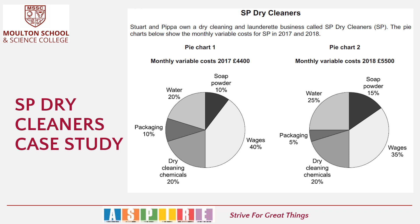So let's have a look at the SP Dry Cleaners case study. Stuart and Pippa own a dry cleaning and launderette business called SP Dry Cleaners. The pie charts below show the monthly variable costs in 2017 and 2018. Please be careful that you identify which pie chart is which. Quite often students don't look at the years and then use the wrong information to do the calculations. There is no guarantee that the exam board will put the oldest figures on the left and the newest on the right, so make sure you're focused on what data relates to what year.